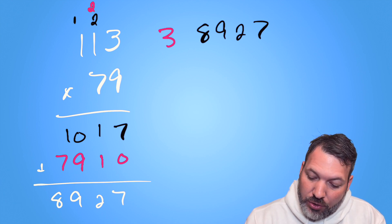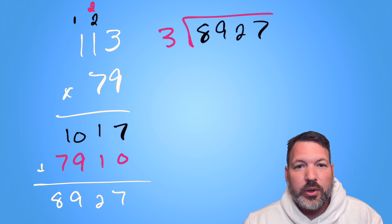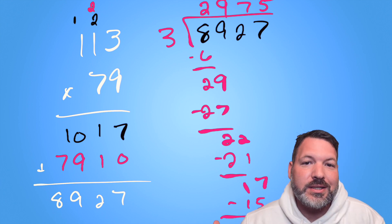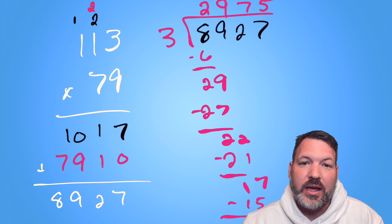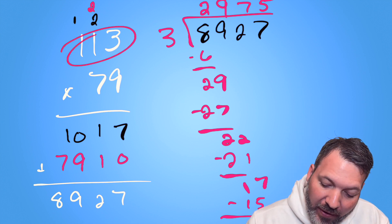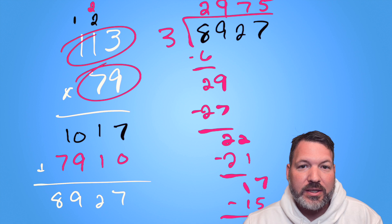We might think, well, does three go into 8,927? But as we divide it out, we find that three does not go into 8,927 evenly. There's a remainder at the end of the process. To get back to these factors, we want there not to be a remainder at the end of the process.